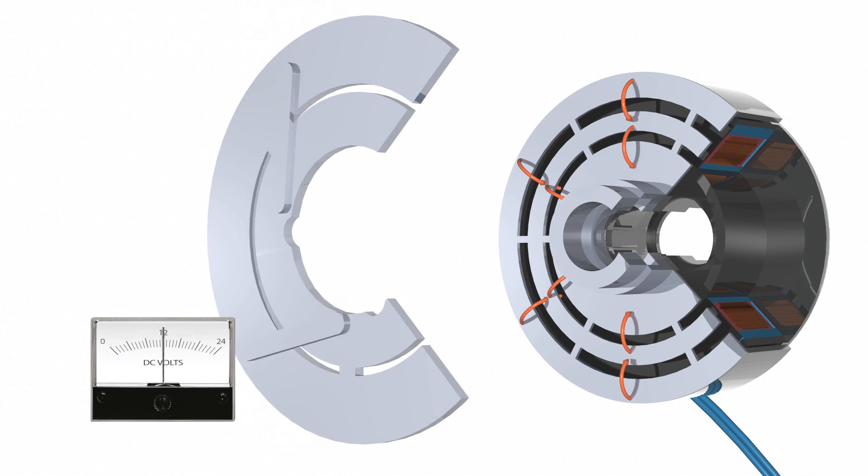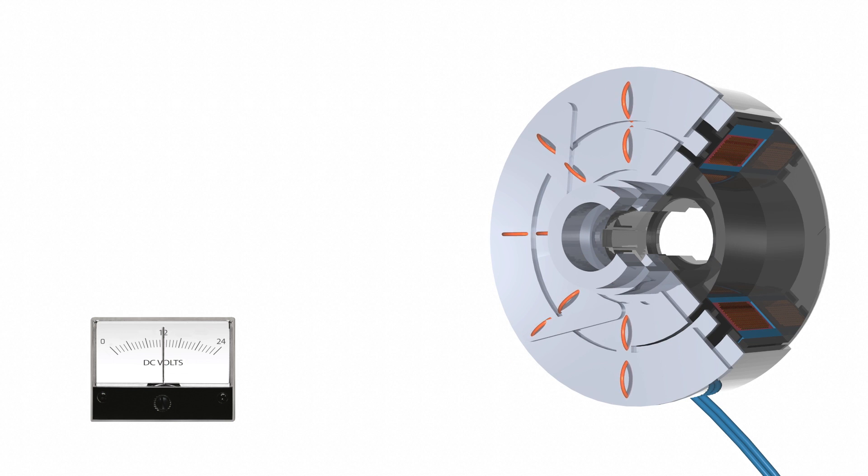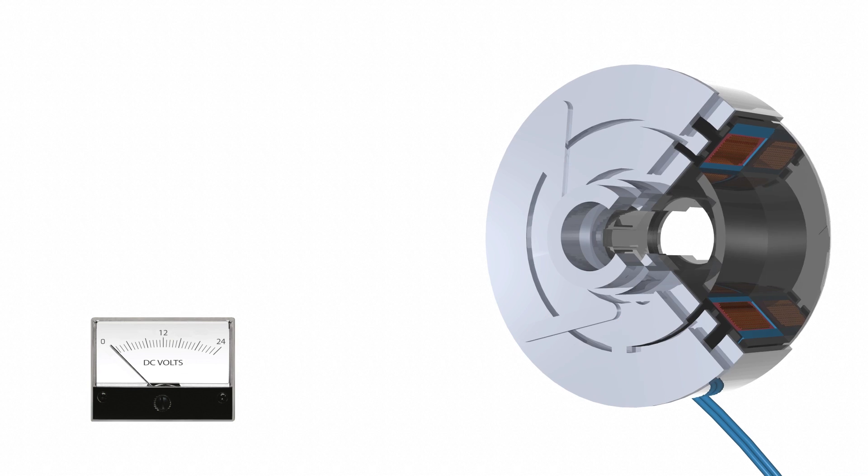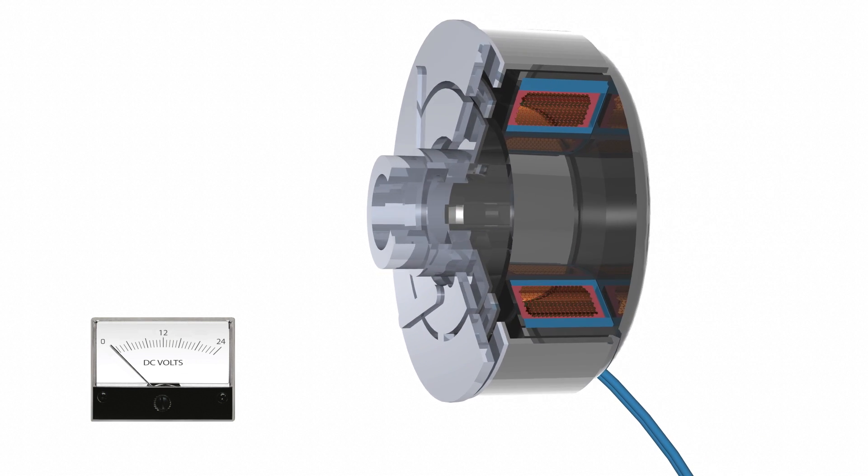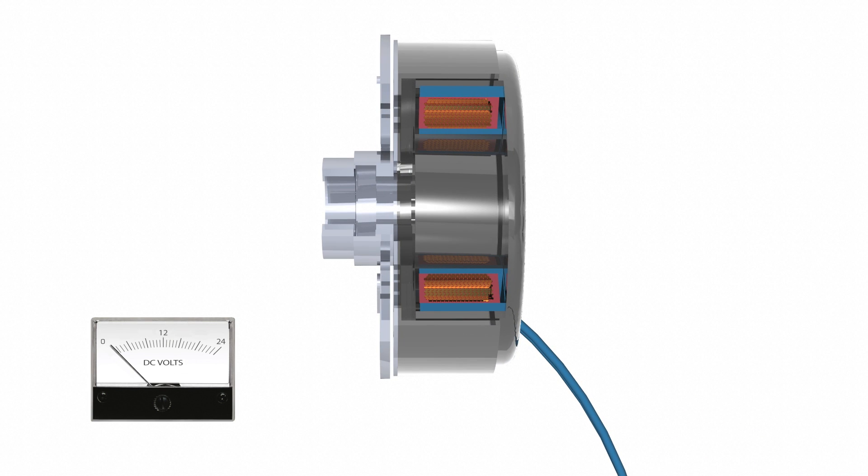PTO clutch brakes use either a double or triple flux design. As the flux travels from the rotor to the armature, it makes multiple points of contact, amplifying the torque being transferred, helping to maximize torque and reduce weight and size.